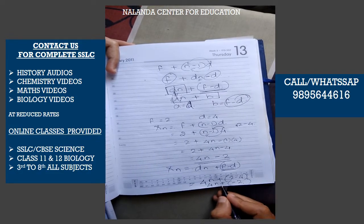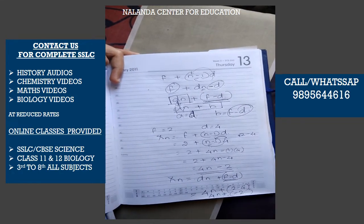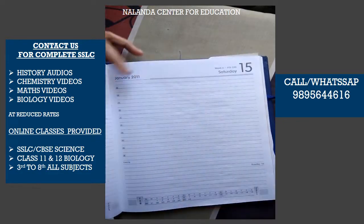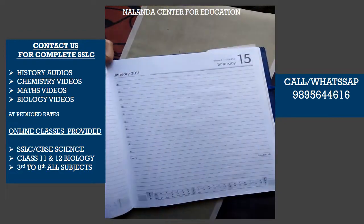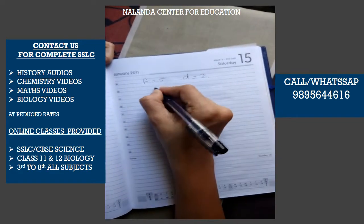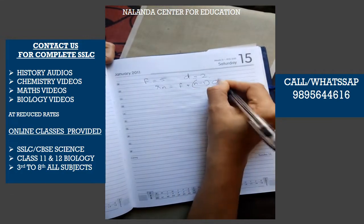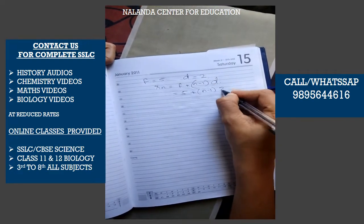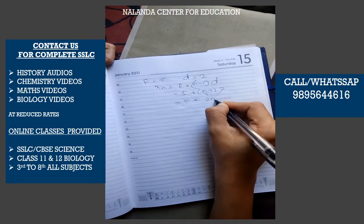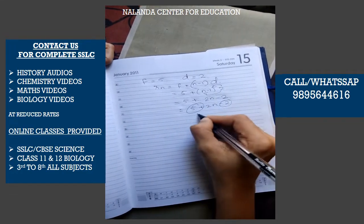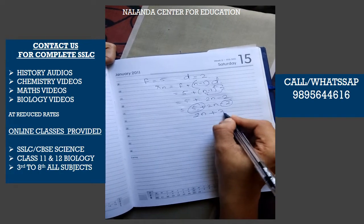Two formulae: f + (n-1)d and dn + (f-d). For this question, f equals 5 and d equals 2. Using xn = f + (n-1)d: xn = 5 + (n-1) into 2. Expanding: 5 + 2n minus 2, which equals 2n plus 3.